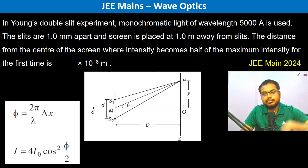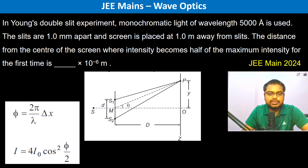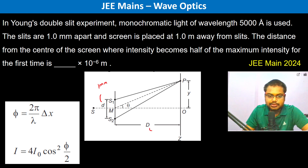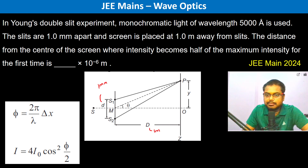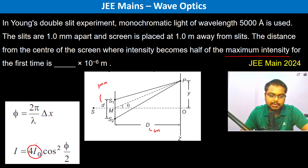In Young's double slit experiment, monochromatic light is used. The slit separation is one millimeter and the screen is one meter away. We need to find the distance from the center of the screen where the intensity becomes half of the maximum intensity. The maximum intensity is 4I₀.